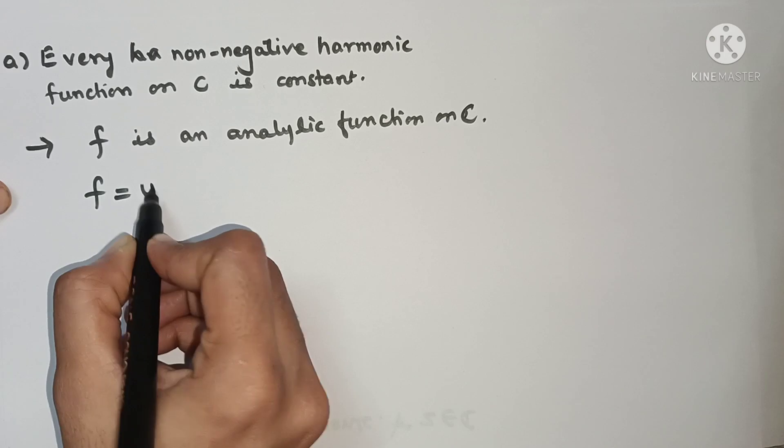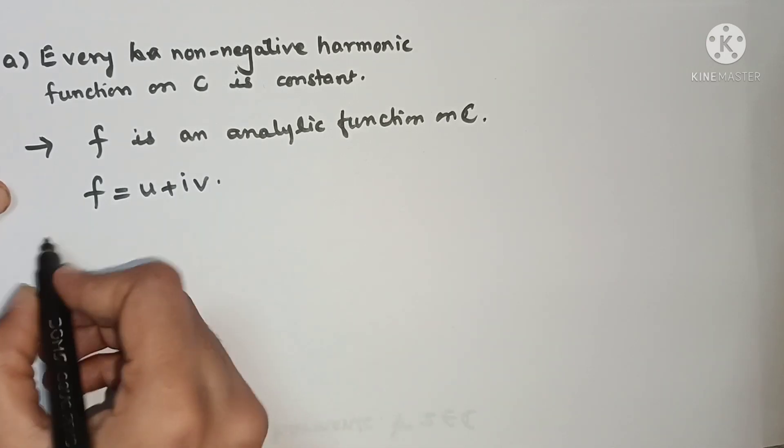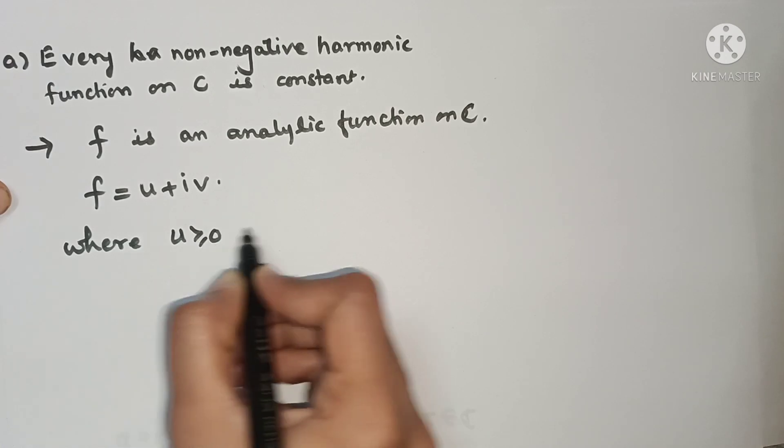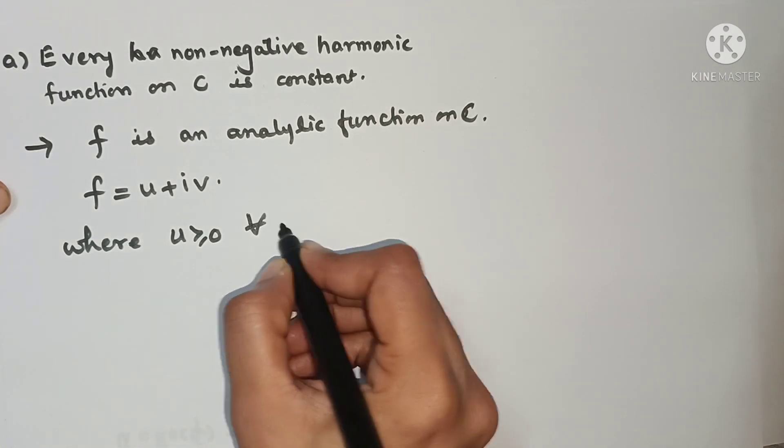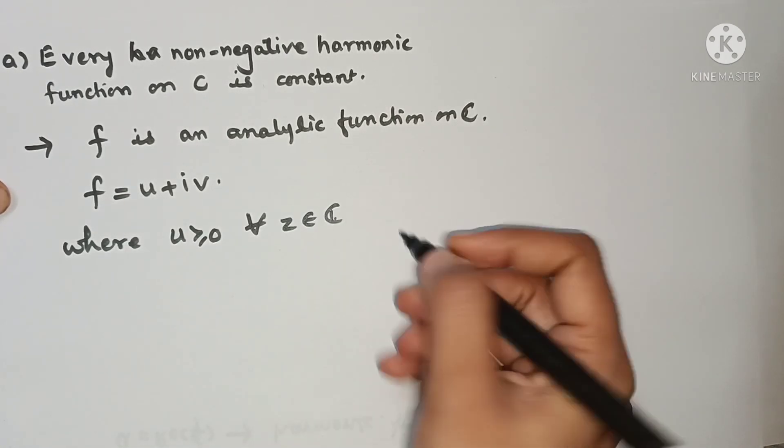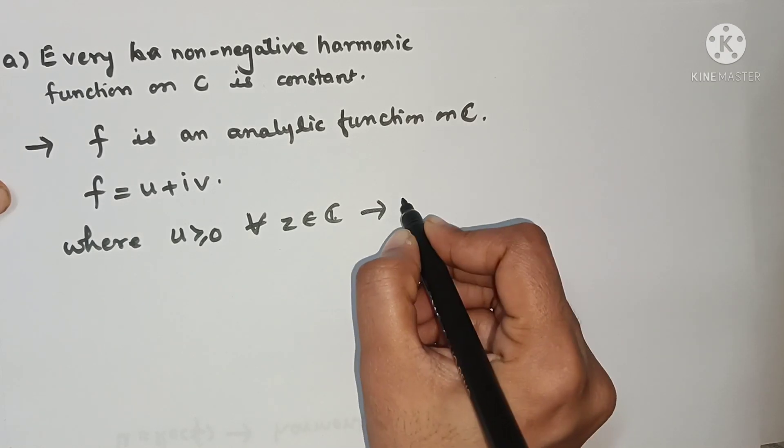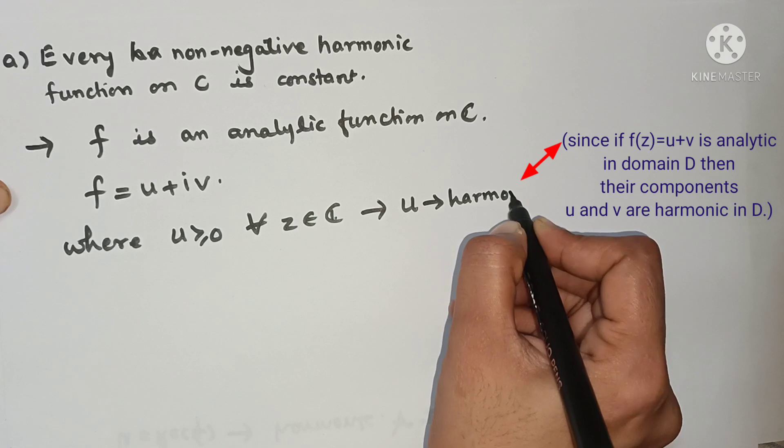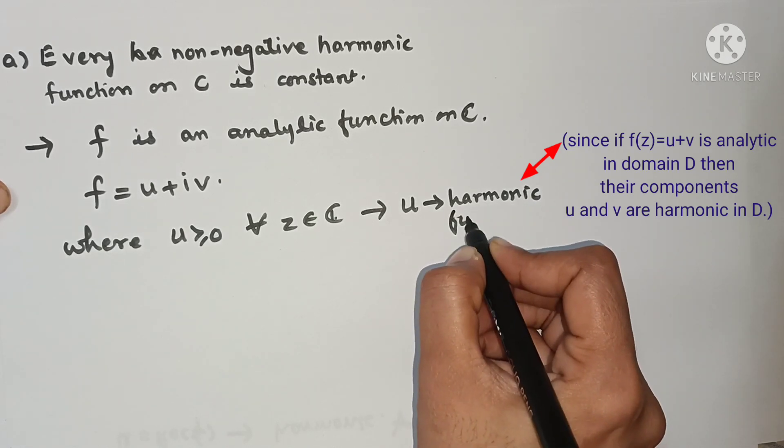And it is equal to U plus iV, where U is greater than or equal to 0 for all Z belongs to C. And also, U is harmonic, it is a harmonic function.